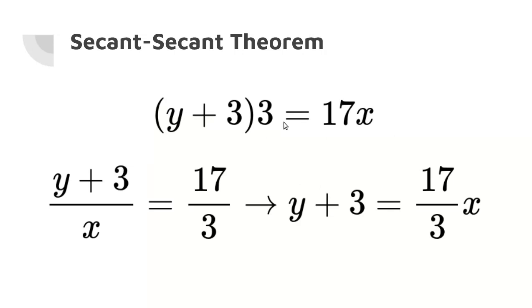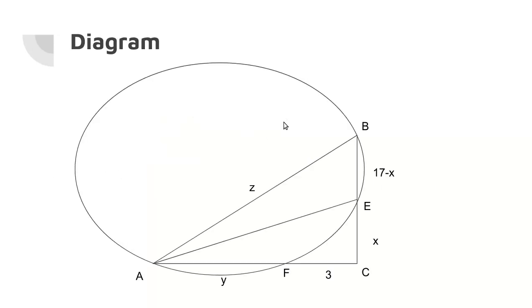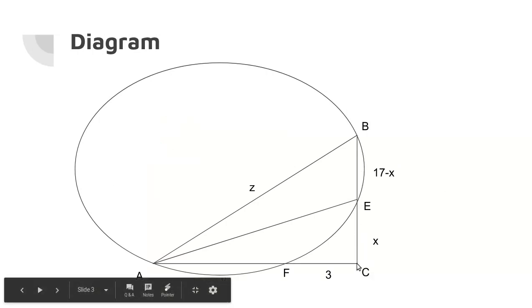Then we're going to use secant-secant theorem. But just to make this clear, let's go back to the diagram. Secant-secant theorem tells us that the outside, which is 3, times the whole, which is Y + 3. So 3 times (Y + 3) equals the outside, which is X, times the whole, which is 17. So just to recap, 3 times (Y + 3) equals X times 17. And that's what secant-secant theorem tells us.